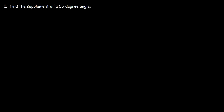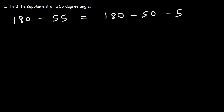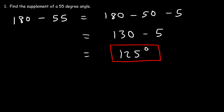Practice Problem 1: Find the supplement of a 55-degree angle. Since supplementary angles add up to 180, the other angle is 180 minus 55. To subtract mentally, break 55 into 50 and 5: 180 minus 50 is 130, and 130 minus 5 is 125. So the supplement of a 55-degree angle is a 125-degree angle.